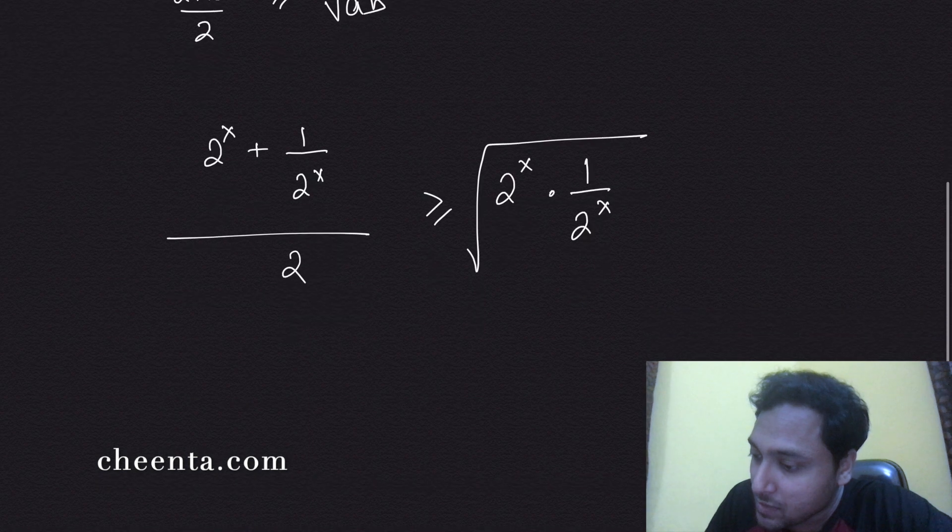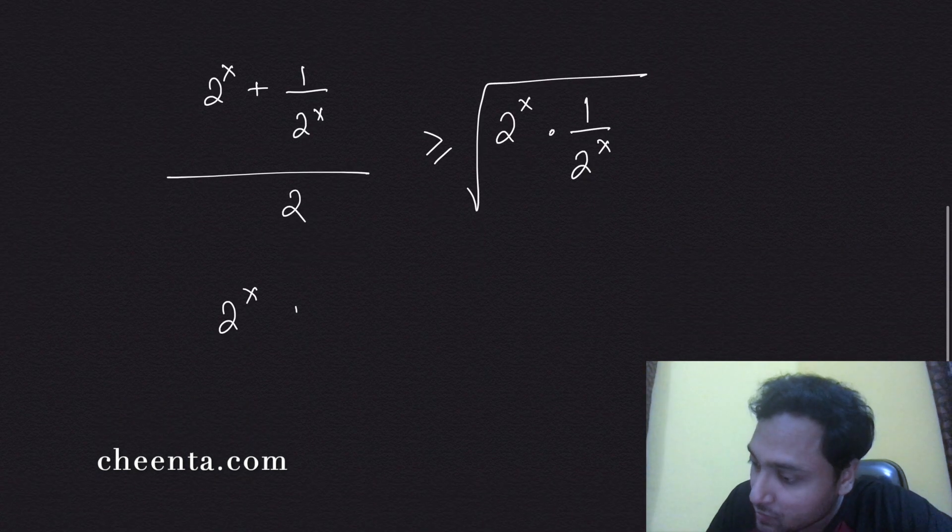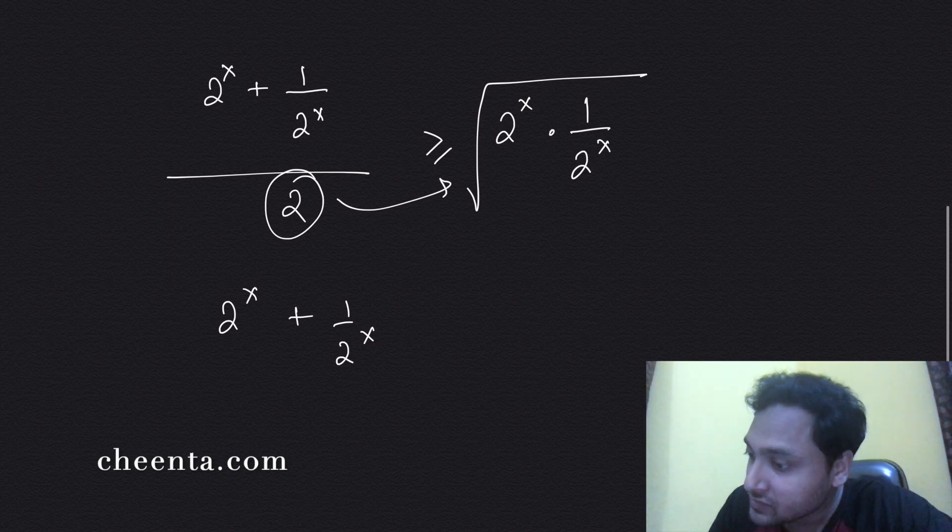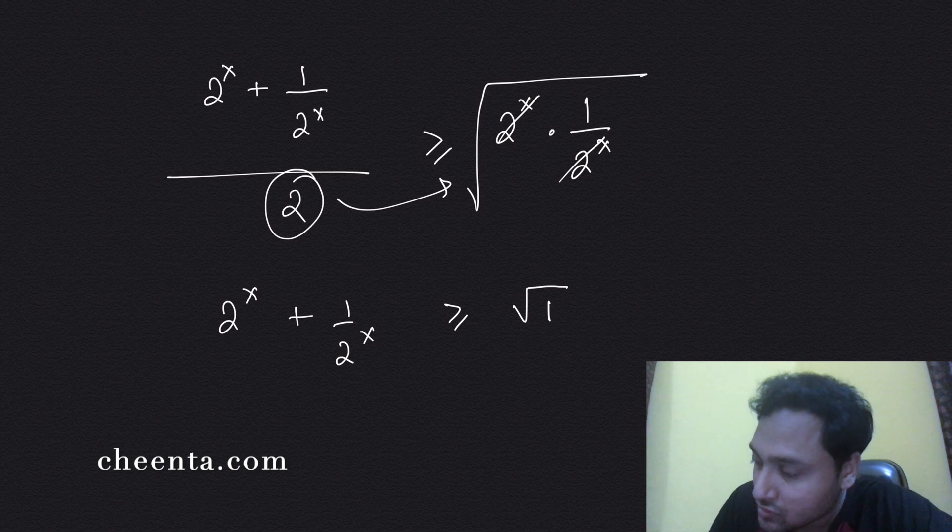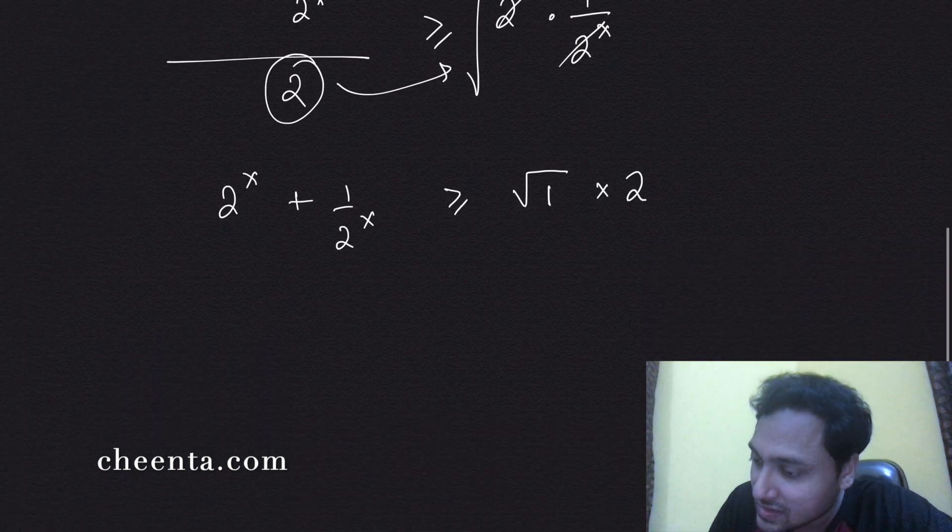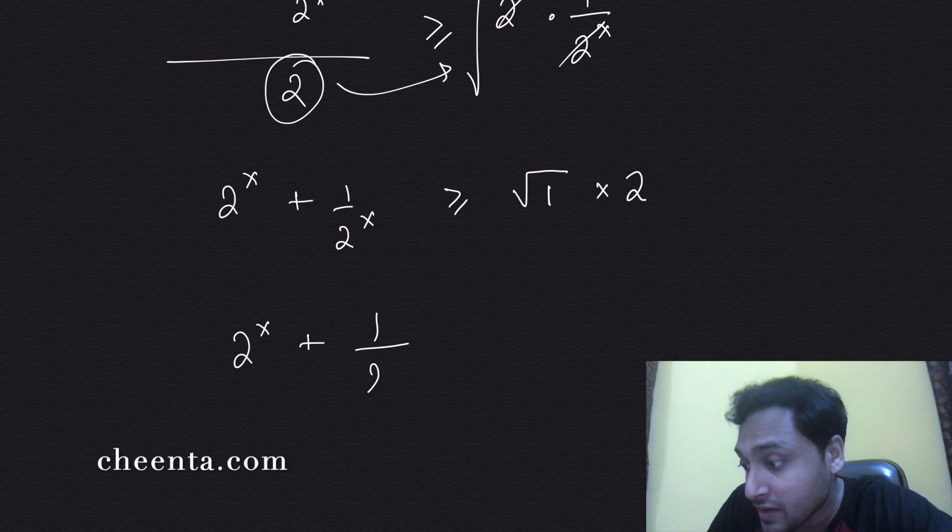So 2^x plus 1/(2^x) - I can cross multiply the two, so these two will cancel - is greater than or equals to square root of one times two.